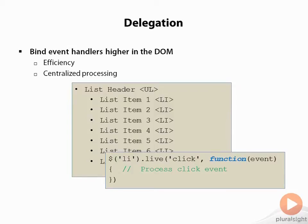The jQuery library has undergone significant enhancements since the live method was first introduced, and the on method is the preferred way to attach event handlers to elements. Since the introduction of the on method, live has been modified to use the same logic as the delegate method, but within different contexts. Using the on method is much more efficient than using bind or live. Depending on how the method is called, jQuery will treat it like a bind method or a delegate method internally.